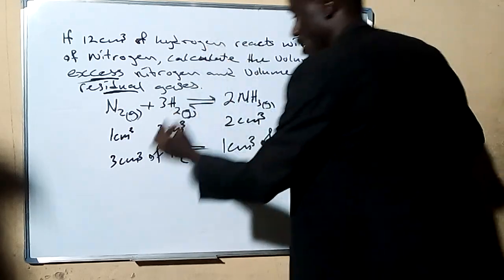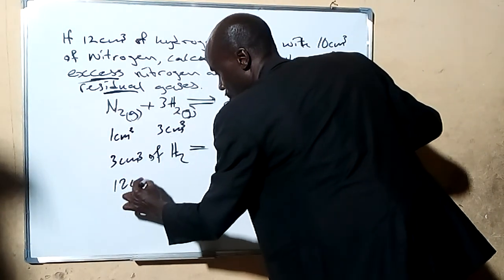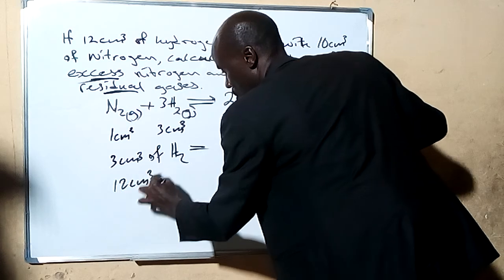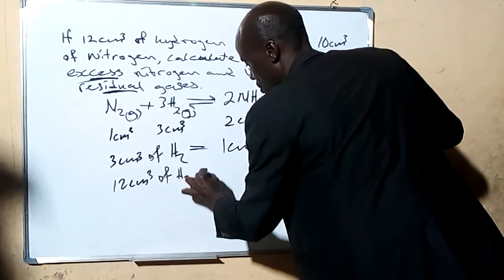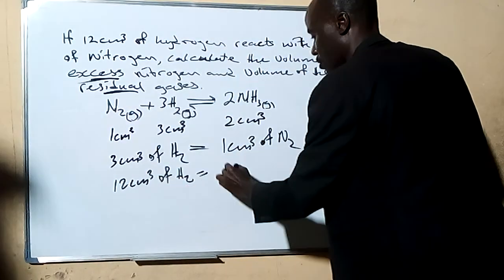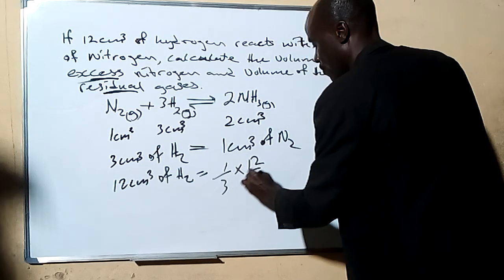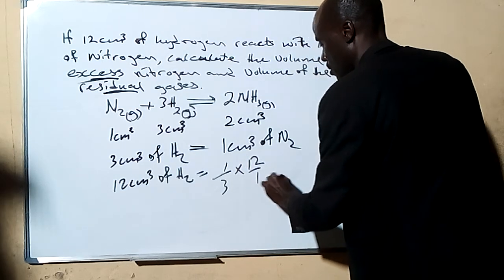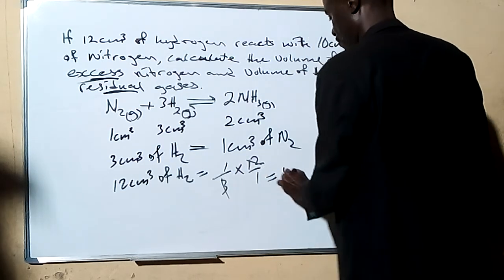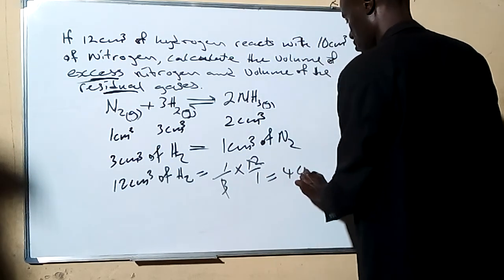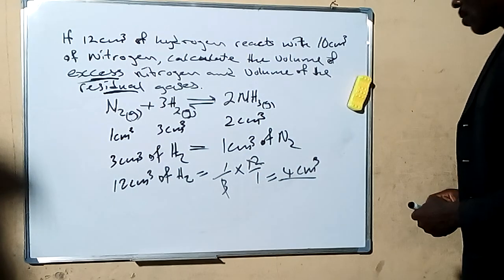So now, 12 cm³ of hydrogen will require: 1 cm³ of nitrogen × (12/3) = 4 cm³ of nitrogen. That gives us 4 cm³.